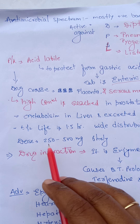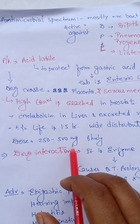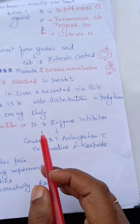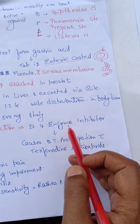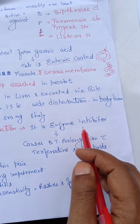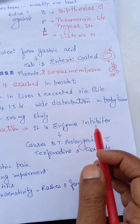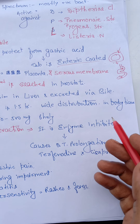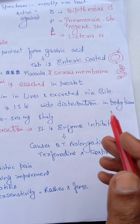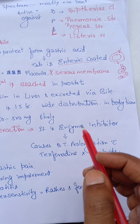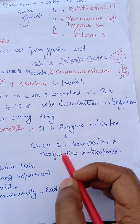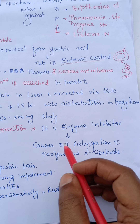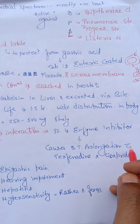The dose of erythromycin is 250 mg to 500 mg six-hourly. Regarding drug interactions, erythromycin is an enzyme inhibitor, which reduces the metabolism of other drugs. When terfenadine or cisapride is taken with erythromycin, it causes QT prolongation.